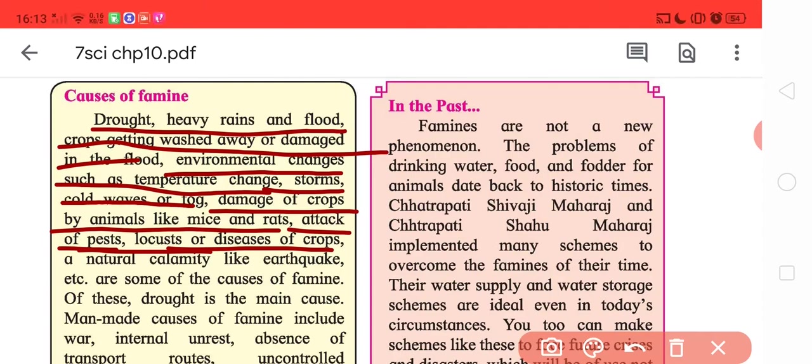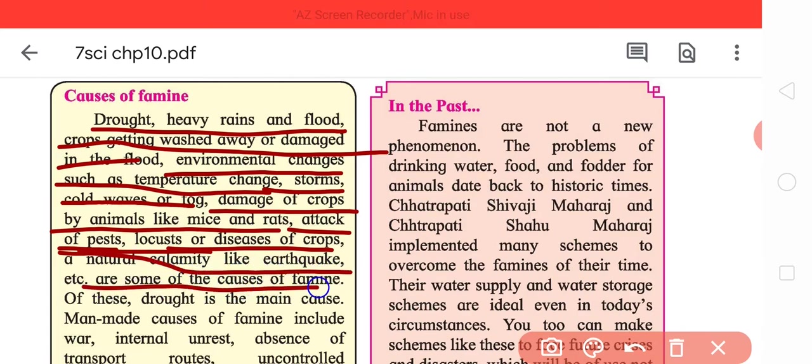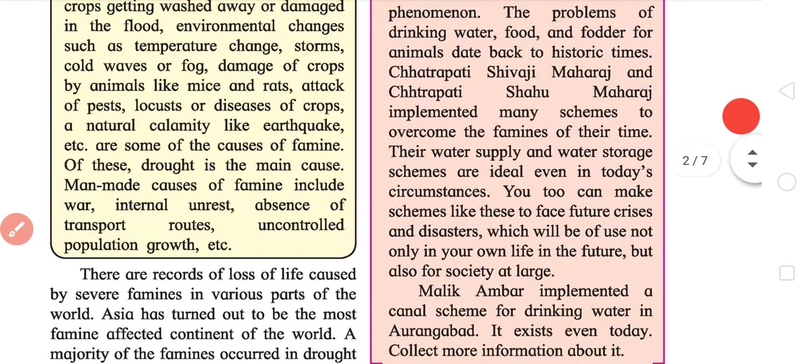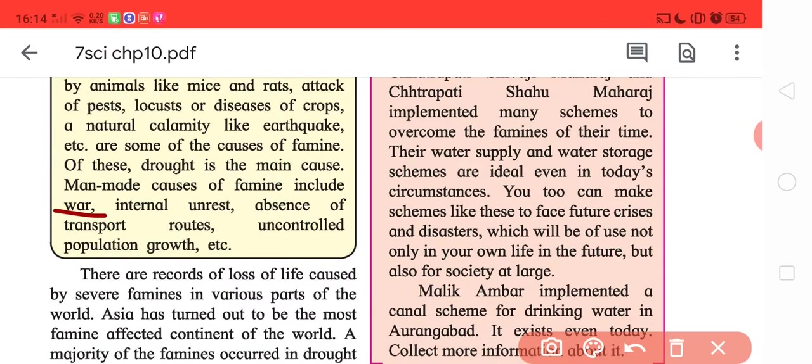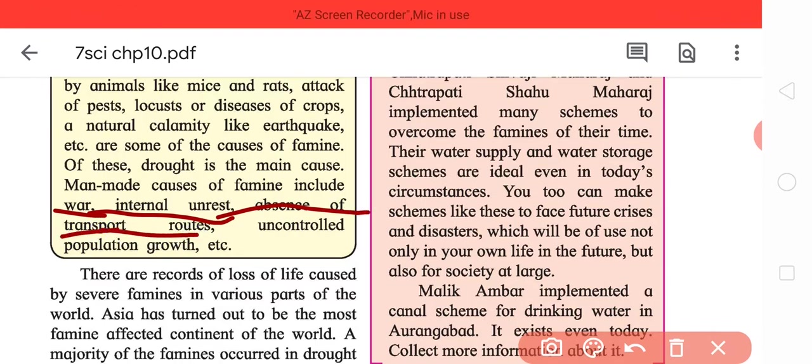Attack of pests, locusts, or disease of crops. Locusts are the most severe of any pest you can get. When you see a pack of locusts coming, create as much noise as possible to scare them away. They destroy every other crop in its wake and leave behind plain destruction. Natural calamity like earthquake, etc., some of the natural causes of famine. Now what is man-made? War, like World War 2, internal unrest like civil war, absence of transport routes, uncontrolled population growth.